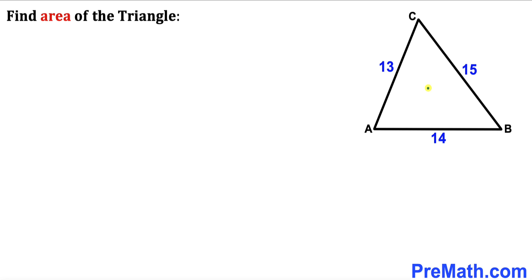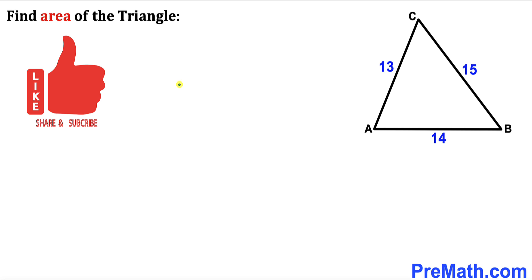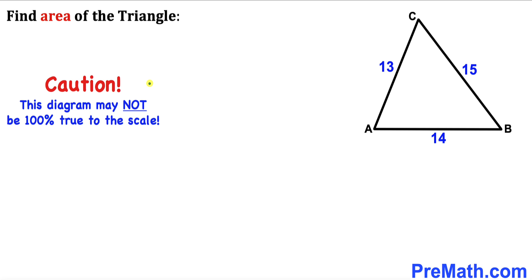Welcome to pre-math. In this video we have a scalene triangle ABC, as you can see in this diagram, whose side lengths are 13, 14, and 15 units respectively. Our task is to calculate the area of this triangle ABC. Please don't forget to give a thumbs up and subscribe, and keep in mind that this figure may not be 100% true to scale.